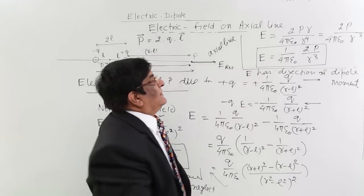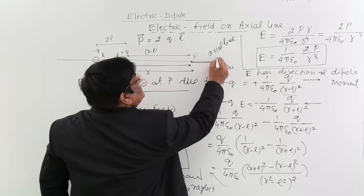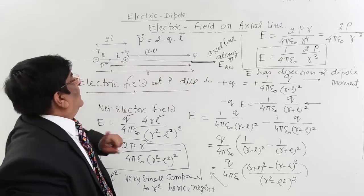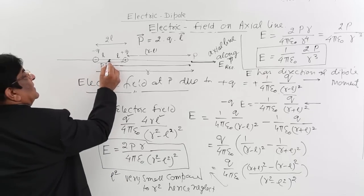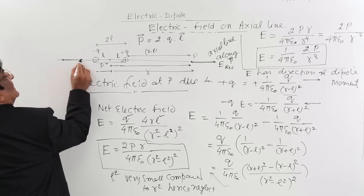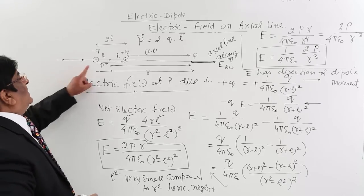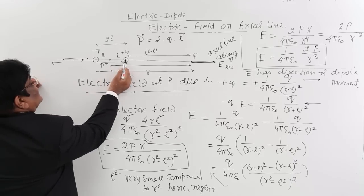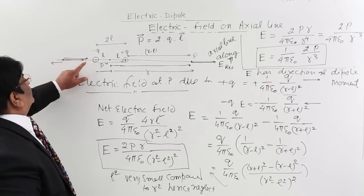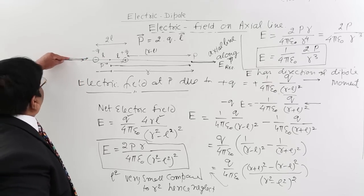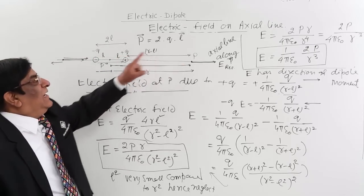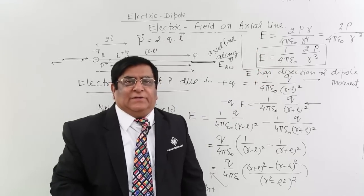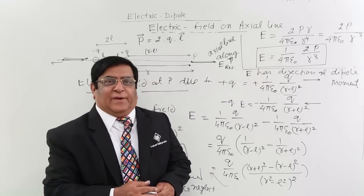So we have the magnitude, and the direction is along P. This means whatever the direction of P, that is the direction of E on the axial line. Whether the point is on this side or the other side, the net electric field is always along the direction of dipole moment — because the nearer charge always dominates. On the complete axial line, at any point, the electric field is always in the direction of P, and E = (1/4πε₀)(2P/R³) is the formula. Next, we will study the electric field due to a dipole on the transversal line.